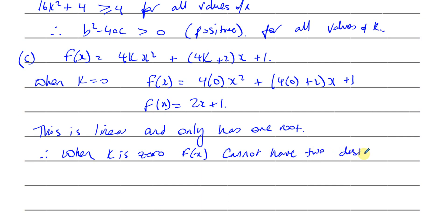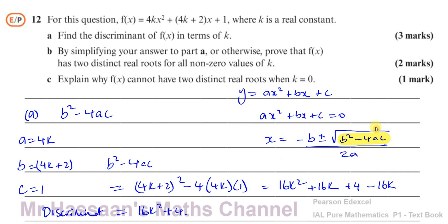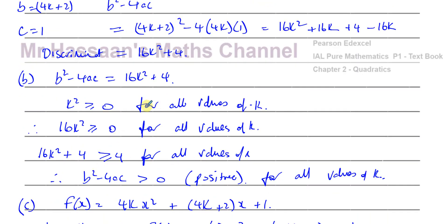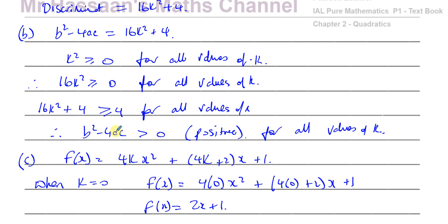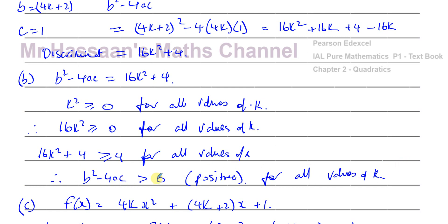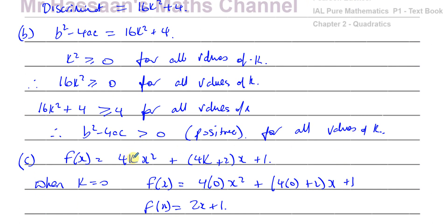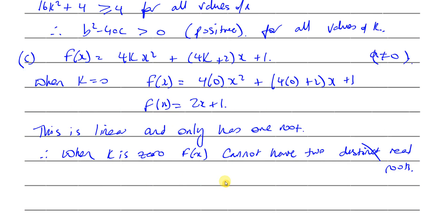So f of x cannot have two distinct real roots when k equals 0. Part b is a proof question where you should clearly show that 16k squared is always greater than or equal to 0, that 16k squared plus 4 is greater than or equal to 4, and therefore the discriminant is greater than 0. However, when k equals 0, the equation changes from a quadratic to a linear equation because the coefficient of x squared becomes 0. In a quadratic, a cannot equal 0, otherwise it becomes linear, as we see here.